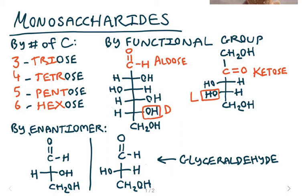The other way we can classify them is by functional groups. So if you have an aldehyde, it's an aldose. If you have a ketone, it's a ketose.